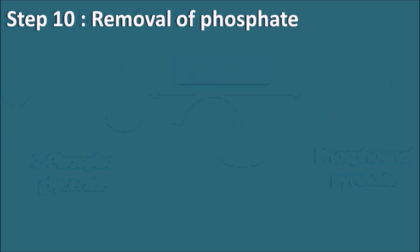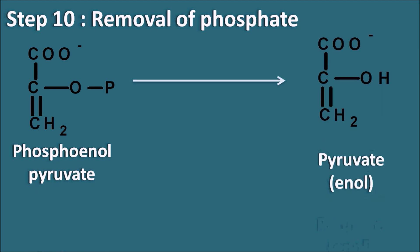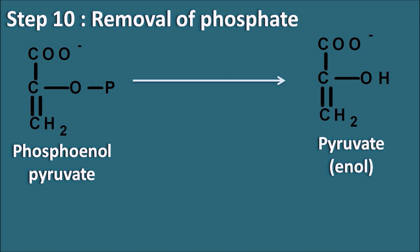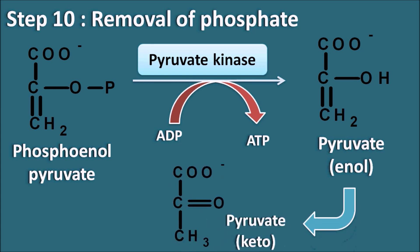Step 10 is the removal of the phosphate group. From phosphoenolpyruvate, the phosphate group is removed to form pyruvate, which is initially present in an enol form. This step is mediated by pyruvate kinase, and the phosphate is again removed as an ATP molecule — another substrate-level phosphorylation. The pyruvate in the enol form then spontaneously converts to the more stable keto form. This is the last step of glycolysis.